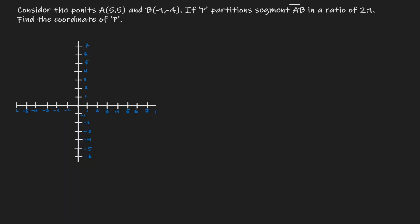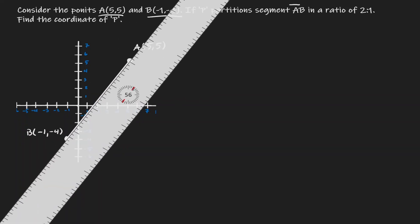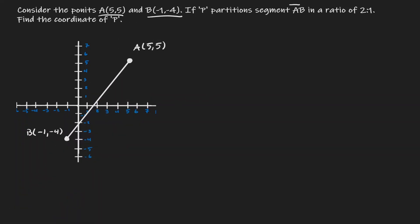Let's consider two points: (5, 5) and (-1, 4). Let's start by plotting those points. Now let's connect those points. What we have created here is a line segment.